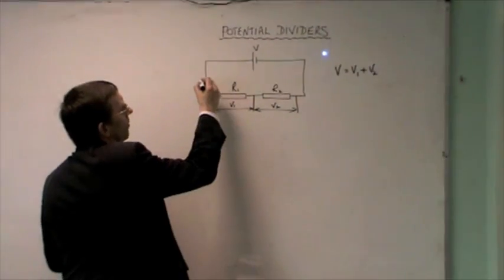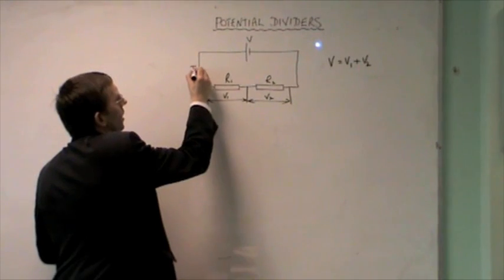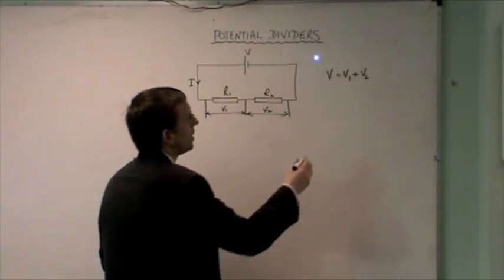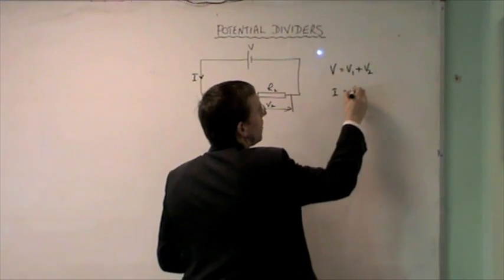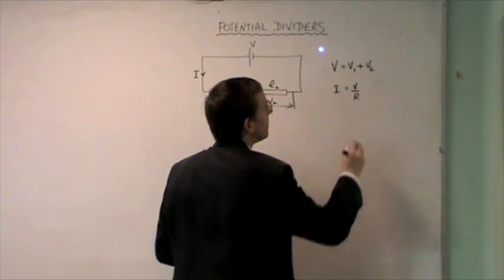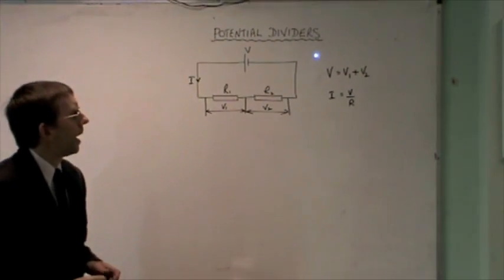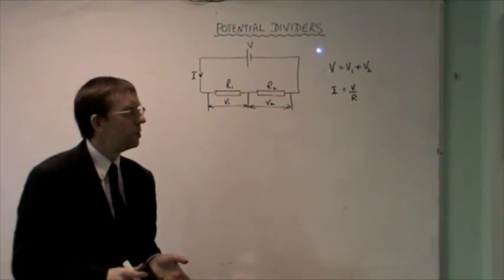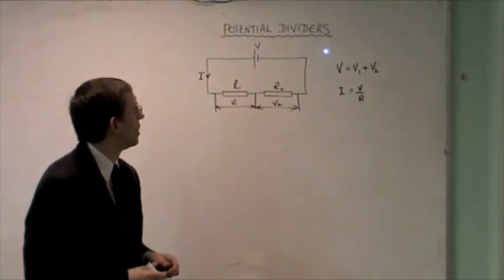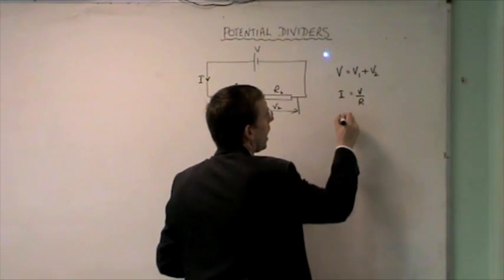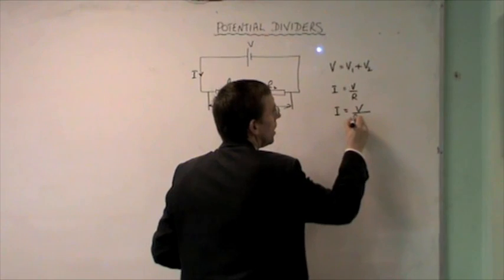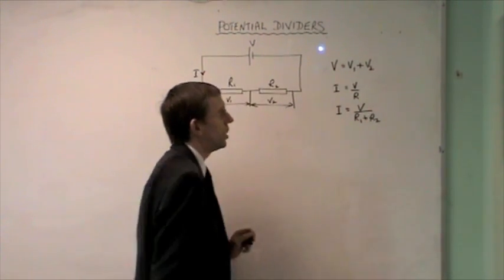Now, the current flowing in this circuit, let's call it I. I can work that out because I know that I equals V over R. And because these two resistors are in series, it's easy to work out the total resistance. It's just going to be R1 plus R2. So I will be equal to V over R1 plus R2.